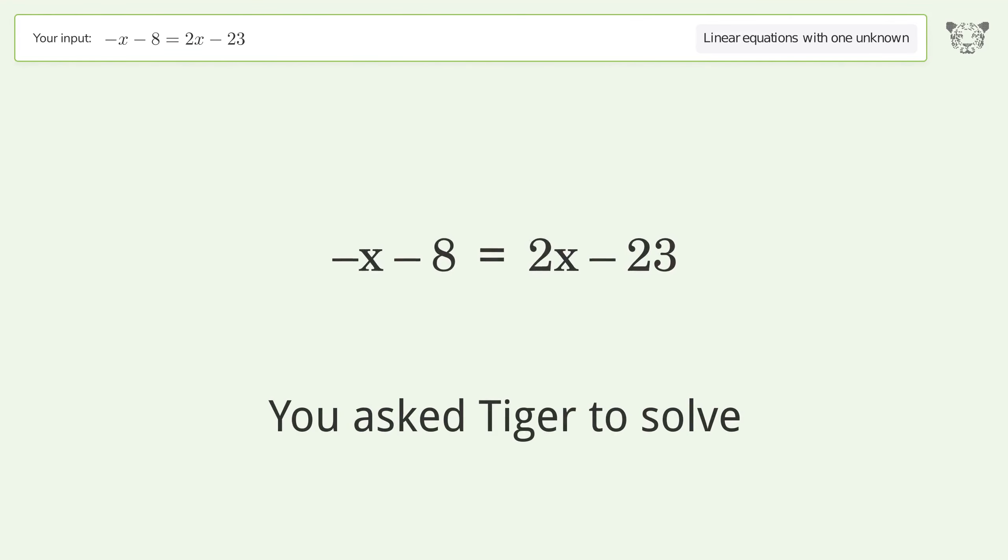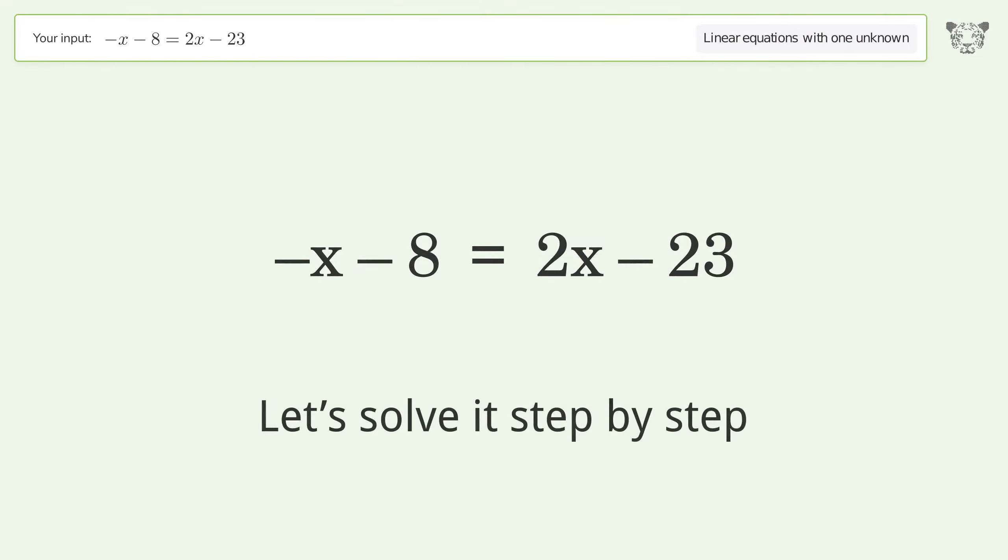You asked Tiger to solve. This deals with linear equations with one unknown. The final result is x equals 5. Let's solve it step by step.